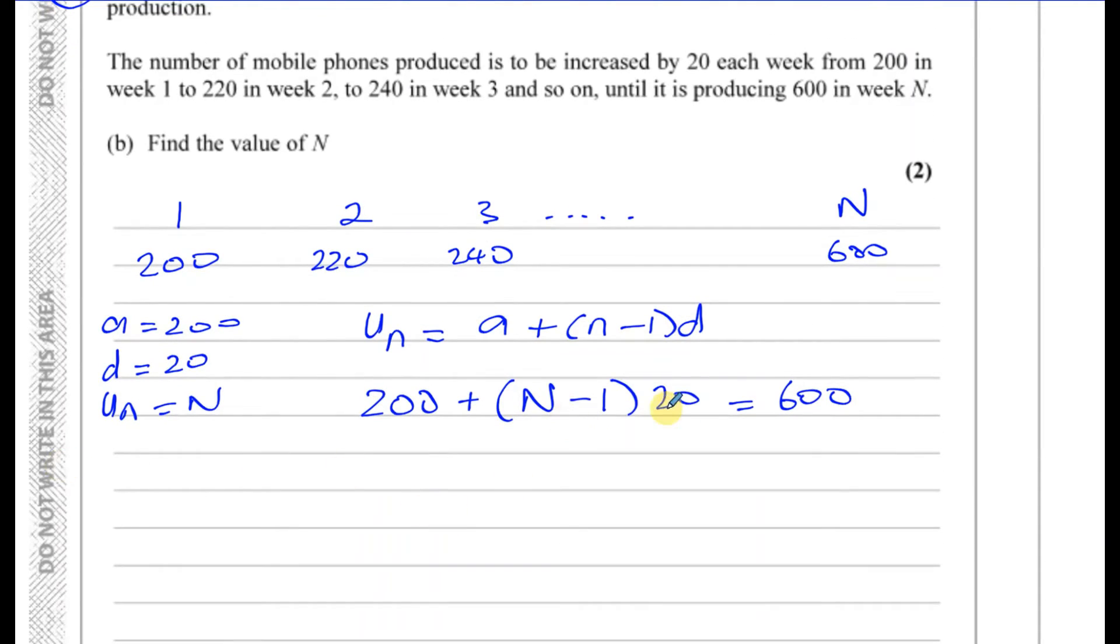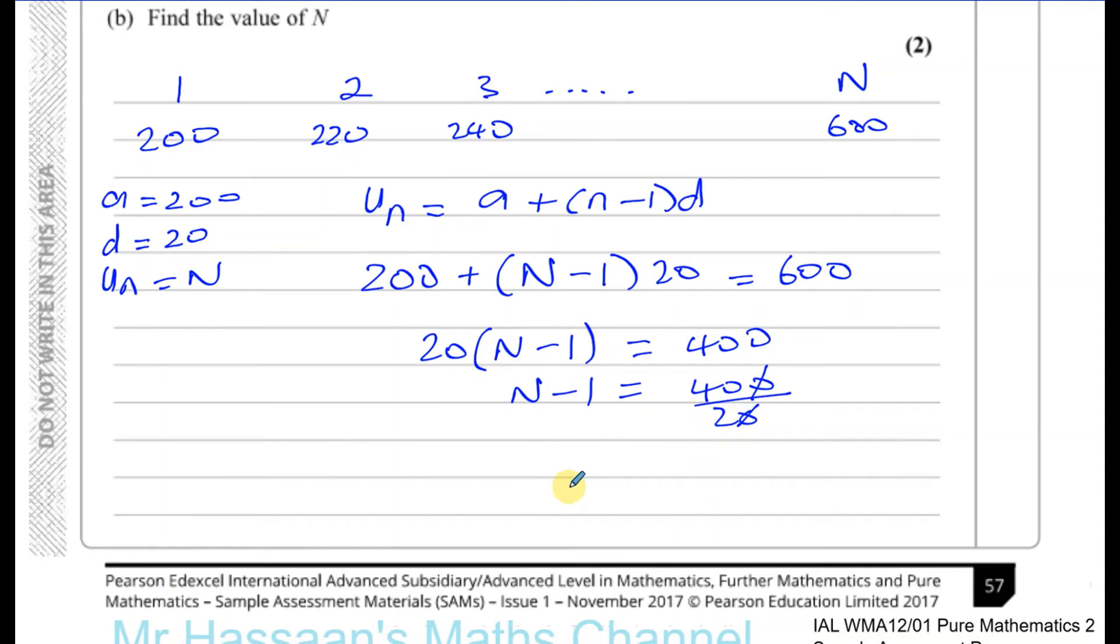If we subtract 200, we have (n-1) times 20 equals 600 minus 200, which is 400. I'll take away 200 from both sides and divide by 20, so n-1 equals 400 over 20. They cancel leaving you with 20, so n-1 equals 20, therefore n equals 21. And there's the answer to part B of this question.